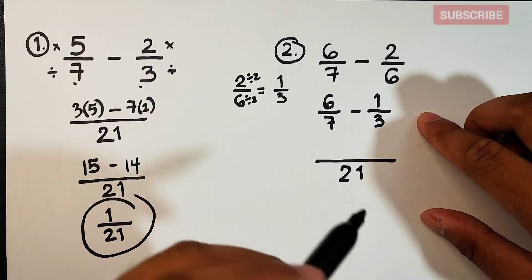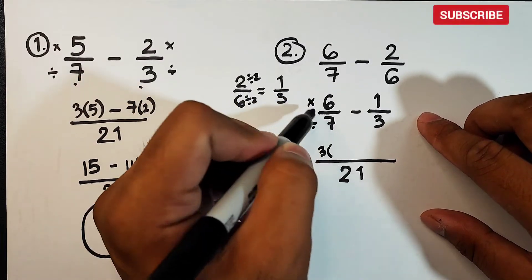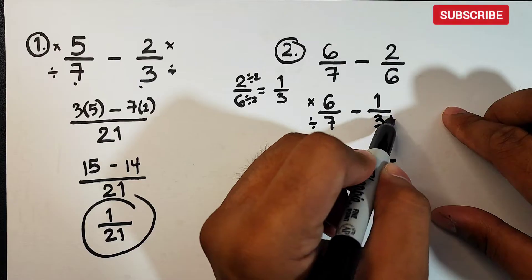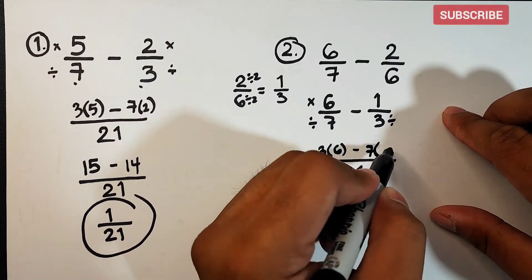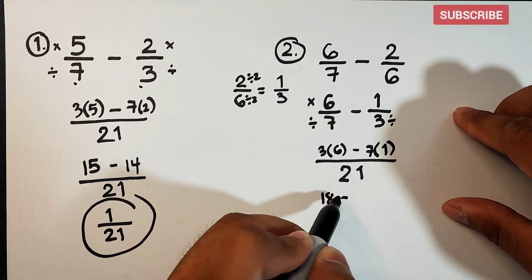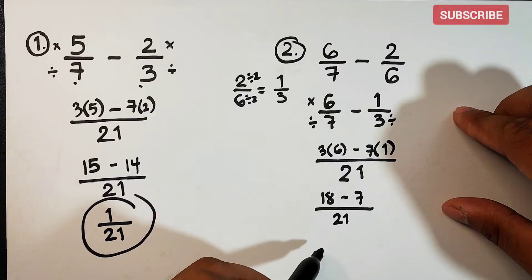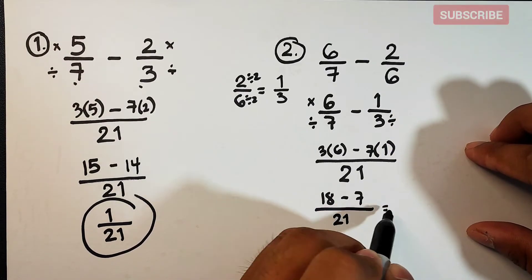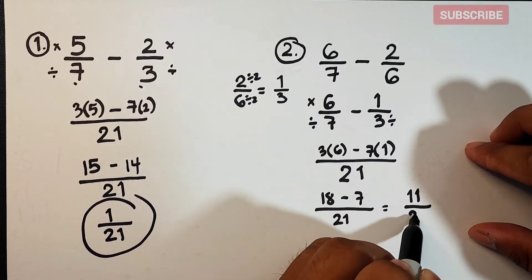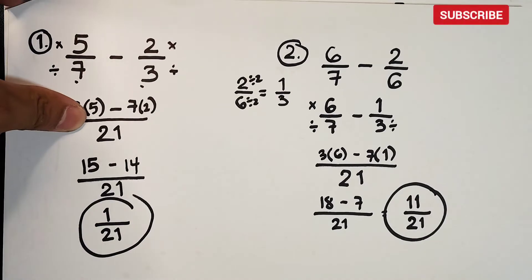So the LCD is 21. Let's compute: 21 divided by 7 equals 3, times 6; minus 21 divided by 3, which equals 7, times 1. Simplifying the numerator: 3 times 6 is 18, minus 7 times 1 is 7. So we have 18 minus 7, which equals 11 over 21. This is the answer for item number 2.